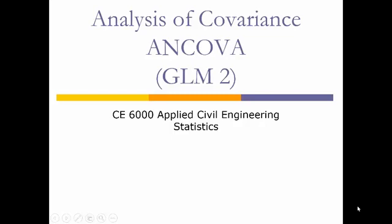Today we're going to talk about the analysis of covariance, or the ANCOVA. GLM2 means General Linear Model 2, where the ANOVA was General Linear Model 1. All of these different ANOVA variants have different General Linear Model numbers - that's how they're referred to in statisticians' world, but in most of our worlds, we just call it the ANCOVA and move on.